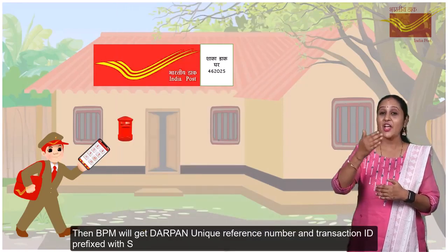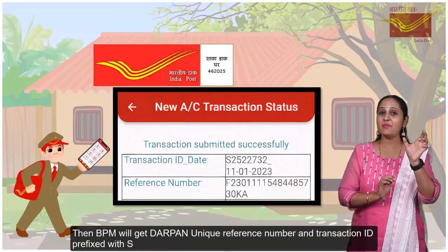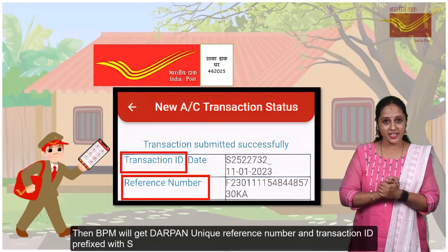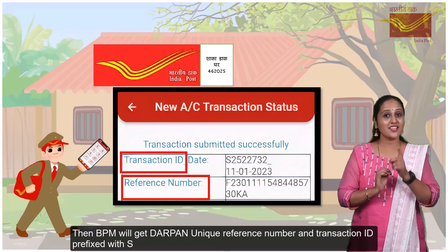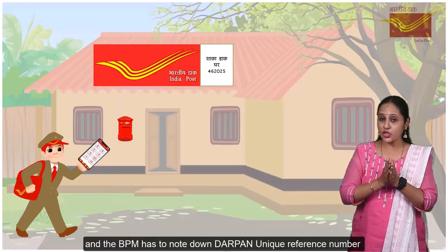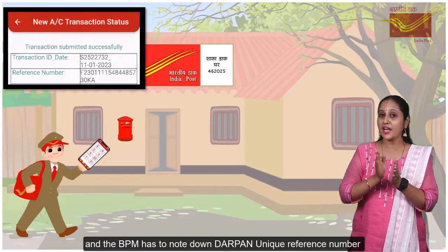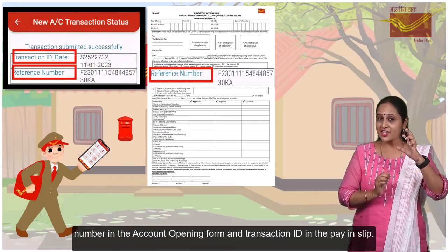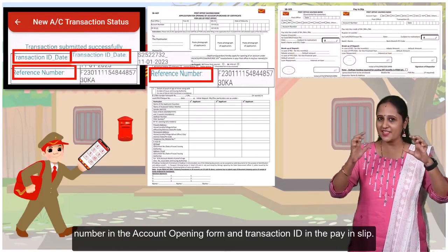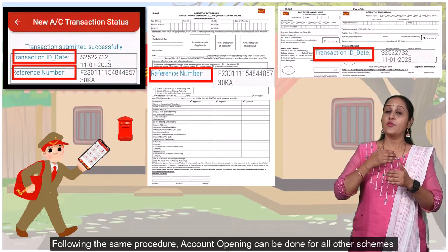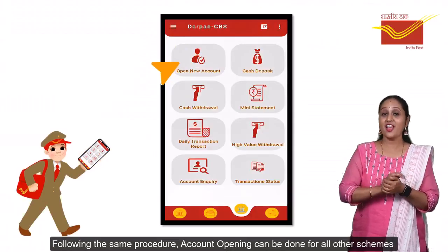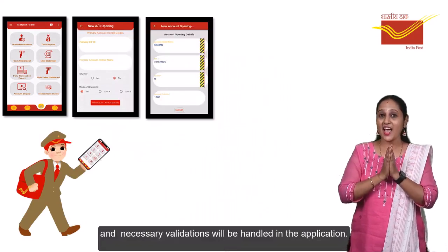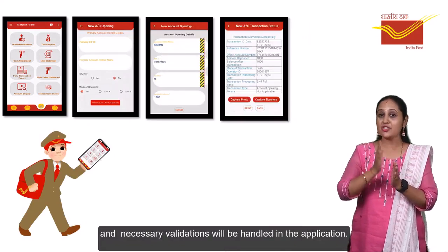The BPM will get a unique reference number and transaction ID prefixed with the branch code. The BPM has to note down the unique reference number on the account opening form and the transaction ID on the pay-in slip. Following the same procedure, account opening can be done for all other schemes, and necessary validations will be handled in the application.